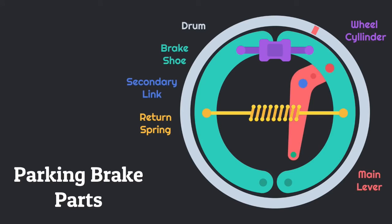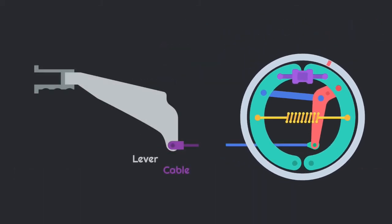On the parking brake, there is one extra thing that is main lever, and main lever is connected with another brake shoe with a secondary link. There is a cable which is connected with the parking brake and the parking brake is connected with a lever.